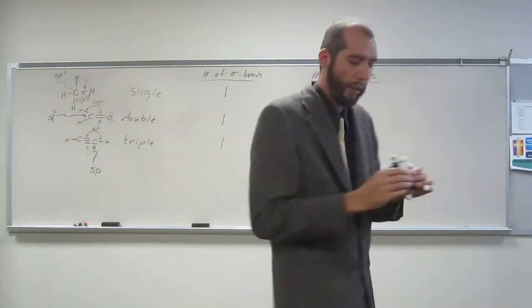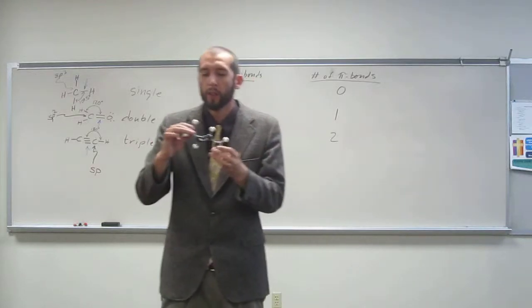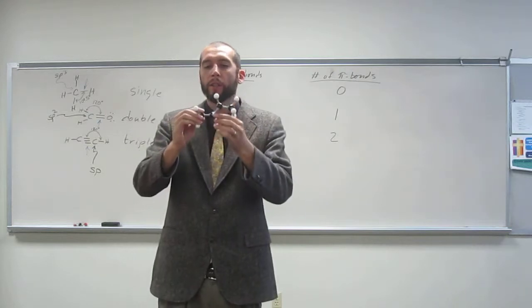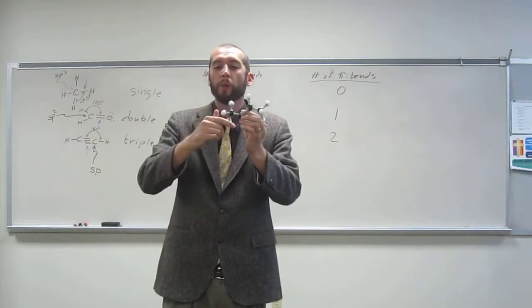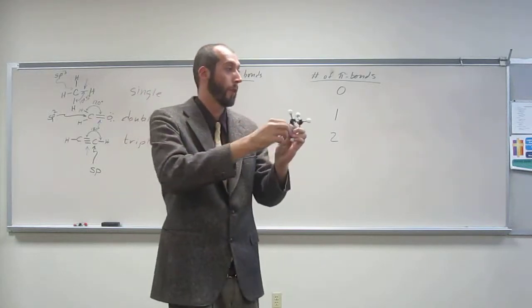We're looking at this double bonded structure called an alkene. When you have just one sigma bond or a single bond, you can rotate freely around that bond. Does everybody see me being able to rotate freely?